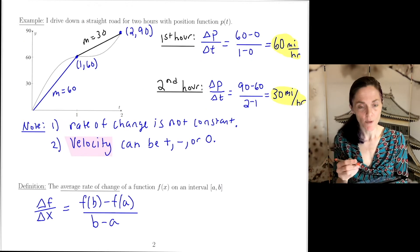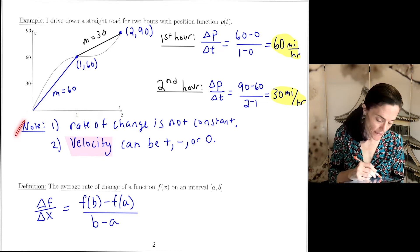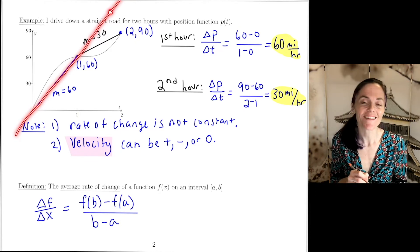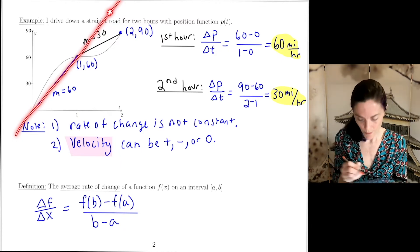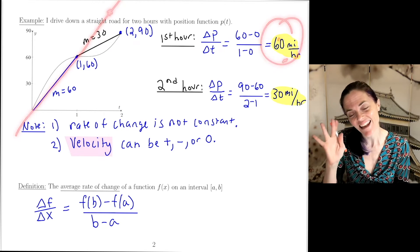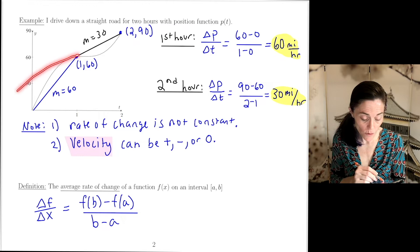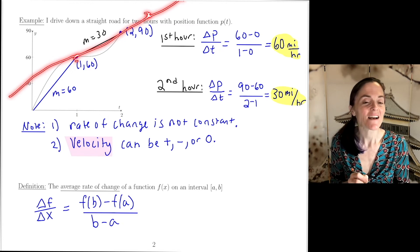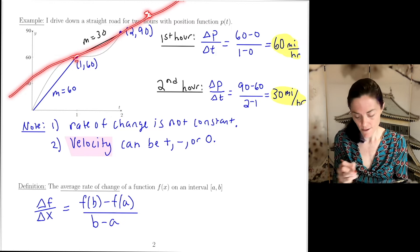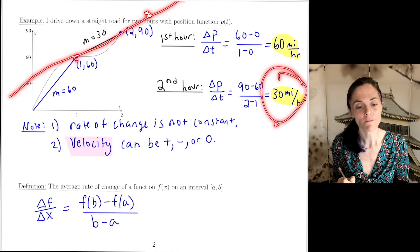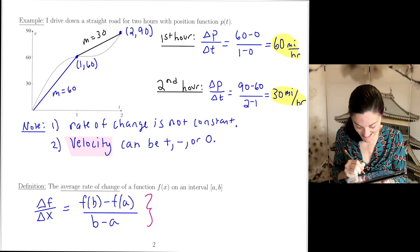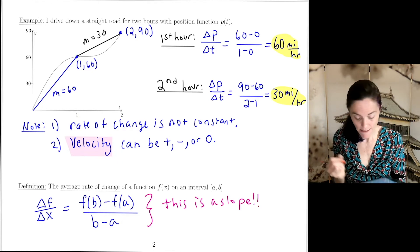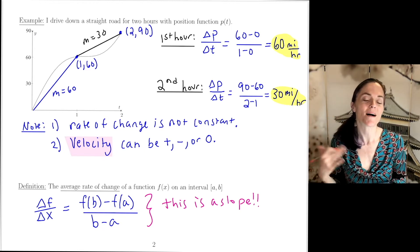Going back to the car position examples: I drew line segments, but if I continued each to a full line, those would be the secant lines for the position function. The secant line on [0, 1] had slope 60, and the secant line on [1, 2] had slope 30 — these are the average rates of change on those intervals.